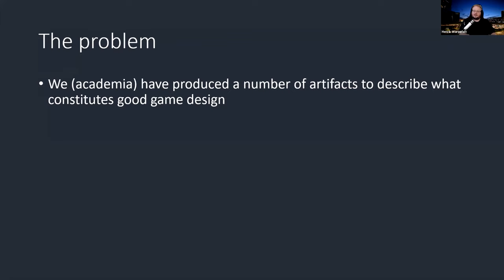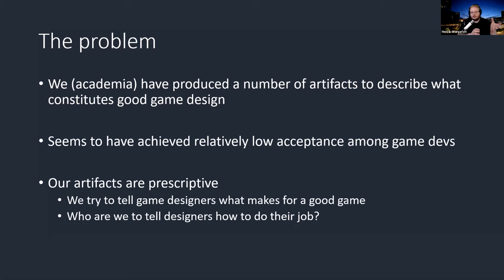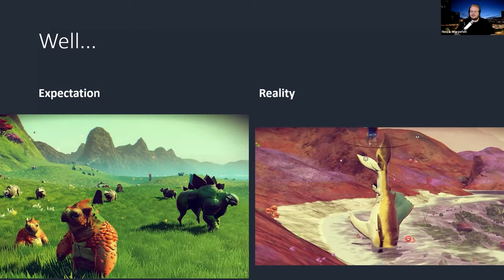What we found is that our artifacts as a community are a little too prescriptive — it comes off as us telling game designers what makes for a good game, and they respond: who are we to tell them how to do their job? I think there's space for us to try to help guide people. But maybe the way we've been going about this hasn't been entirely correct. What if we focus on avoiding bad game design? Instead of telling them how to do their job, we give them tools to identify whether something is a problem with their design and explain why.